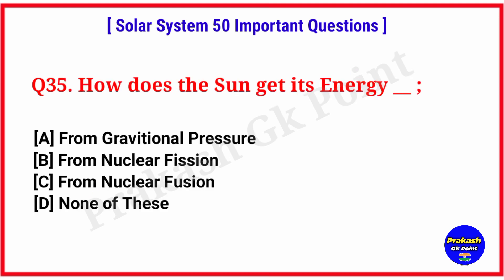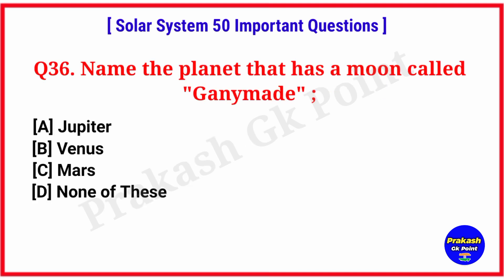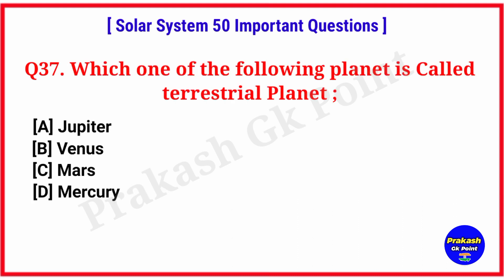How does the sun get its energy? Answer: option C, from nuclear fusion. Name the planet that has a moon called Ganymede? Answer: option A, Jupiter. Which one of the following planets is called a terrestrial planet? Answer: option D, Mercury.